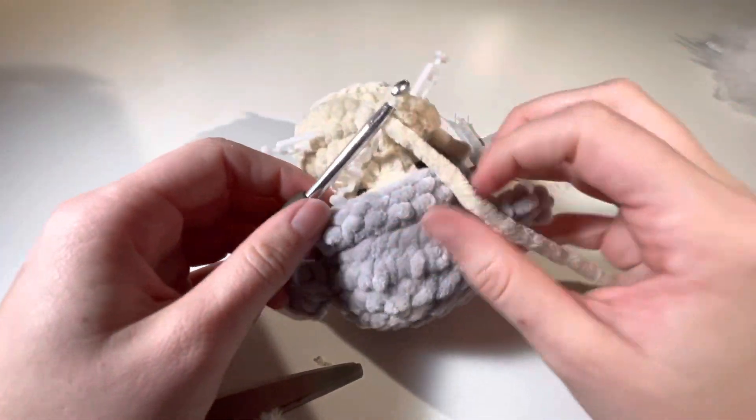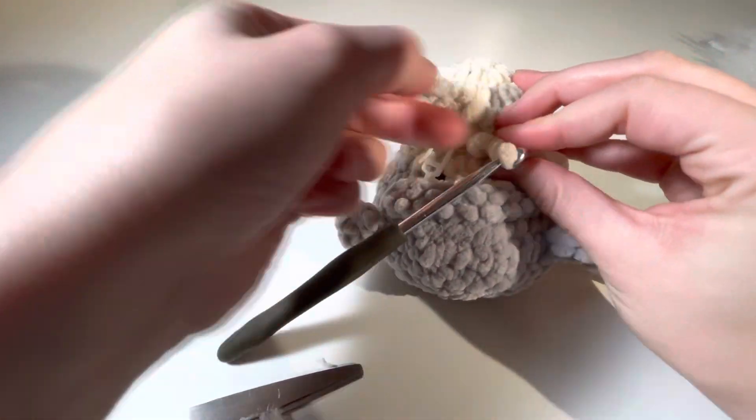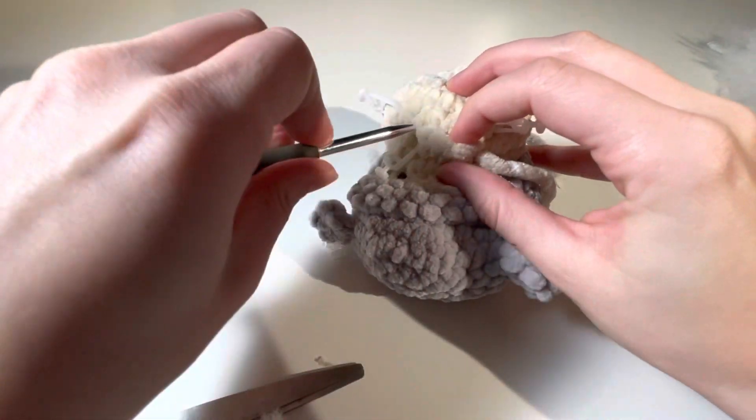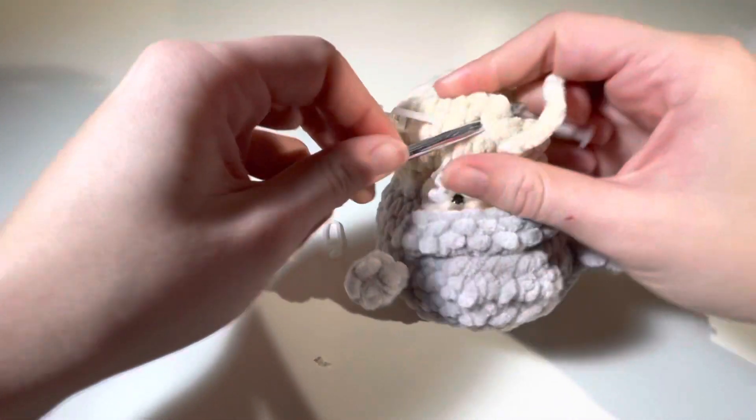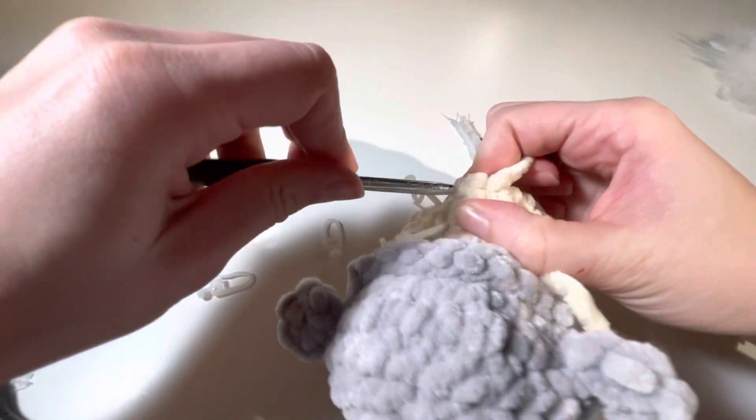Now what I'm going to do is I'm going to turn the head around so the snout is facing away from me. I'm going to enter this middle stitch from the inside to the outside. This is important to kind of shape the nose. I'm going to slip stitch into here.